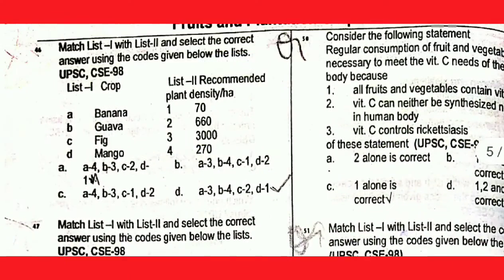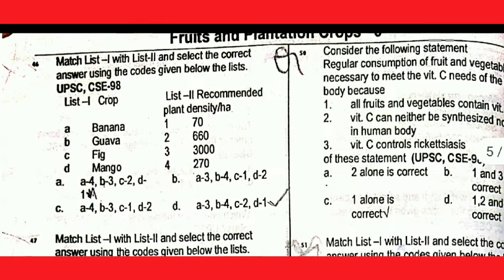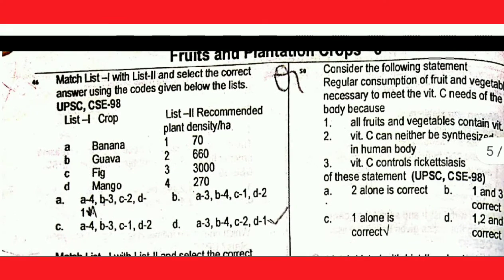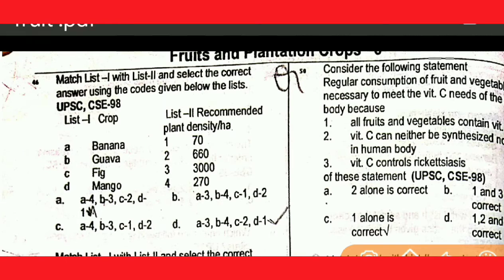Next question: match list one (recommended plant density per hectare) with list two. Crops listed: banana, guava, fig, mango. Plant density for banana per hectare is given, and for guava it is 270 plants per hectare, for fig it is 6,600 plants per hectare.